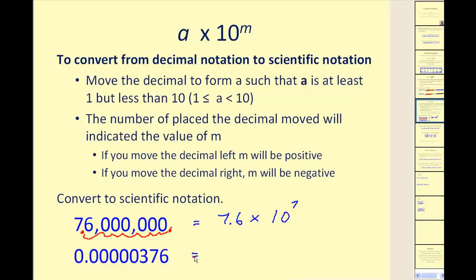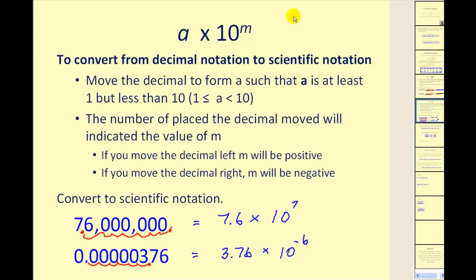In the second example, to form a number at least one but less than 10, the decimal would be placed to give a value of 3.76. This is a very small number, indicating a negative exponent. Counting the number of places we move the decimal to the right gives us six, so the exponent is negative six: 3.76 times 10 to the negative sixth.